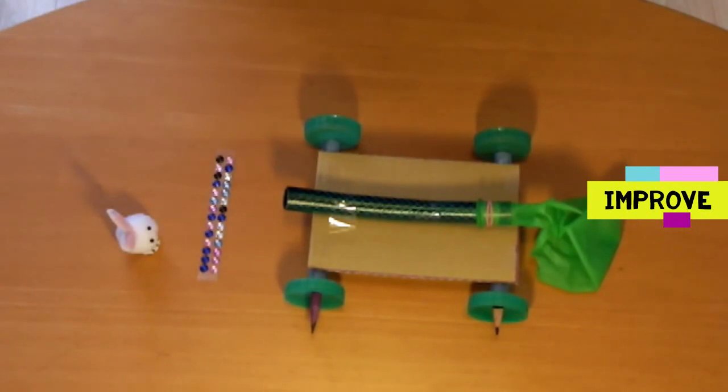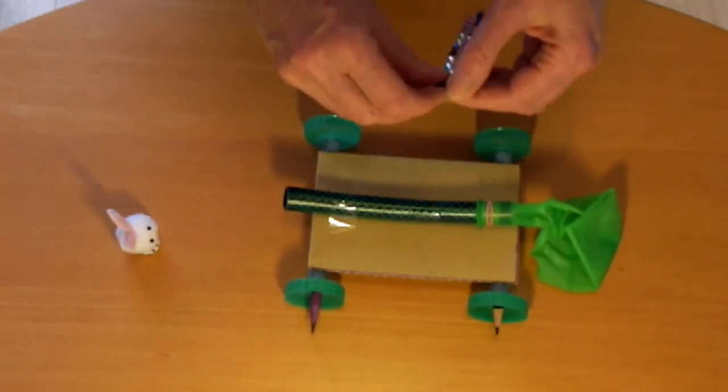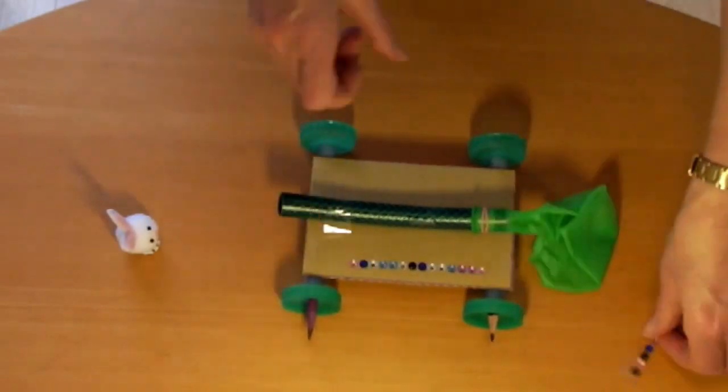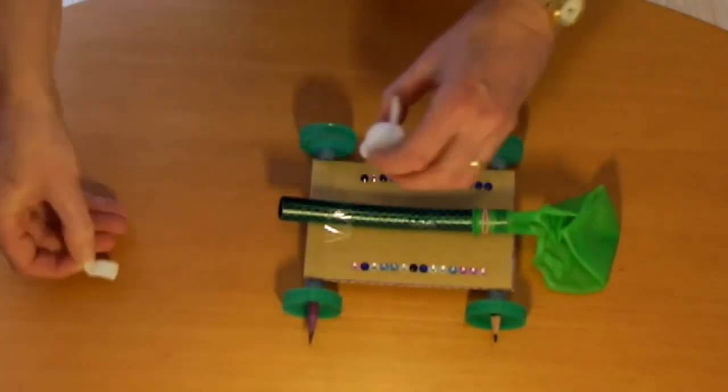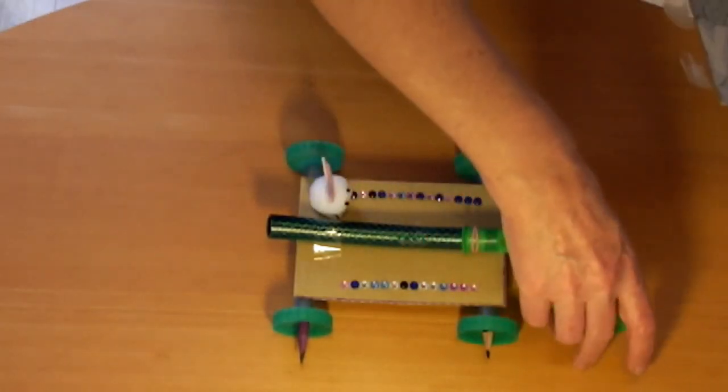Here are some ideas to improve your buggy. You can decorate it or color it in. I'm going to put some gems on and a little passenger. You can compare how the buggy moves on different surfaces such as a smooth floor, carpet and tarmac. Then you can adapt the buggy to run better on rough surfaces. Here I've made an extension to stop the balloon from rubbing on the floor.